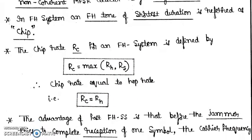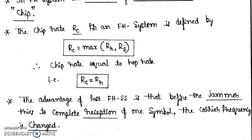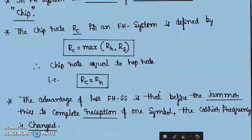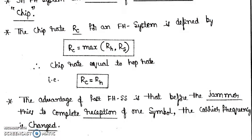The advantage of fast FHSS is that before the jammer rises to complete reception of one symbol the carrier frequency is changed. So it is very difficult for a jammer to detect the signal or the detection becomes very difficult because during one symbol while sending one symbol the carrier frequency is changed. But in case of your slow FHSS when you are sending multiple symbols are sent through a single frequency hop.